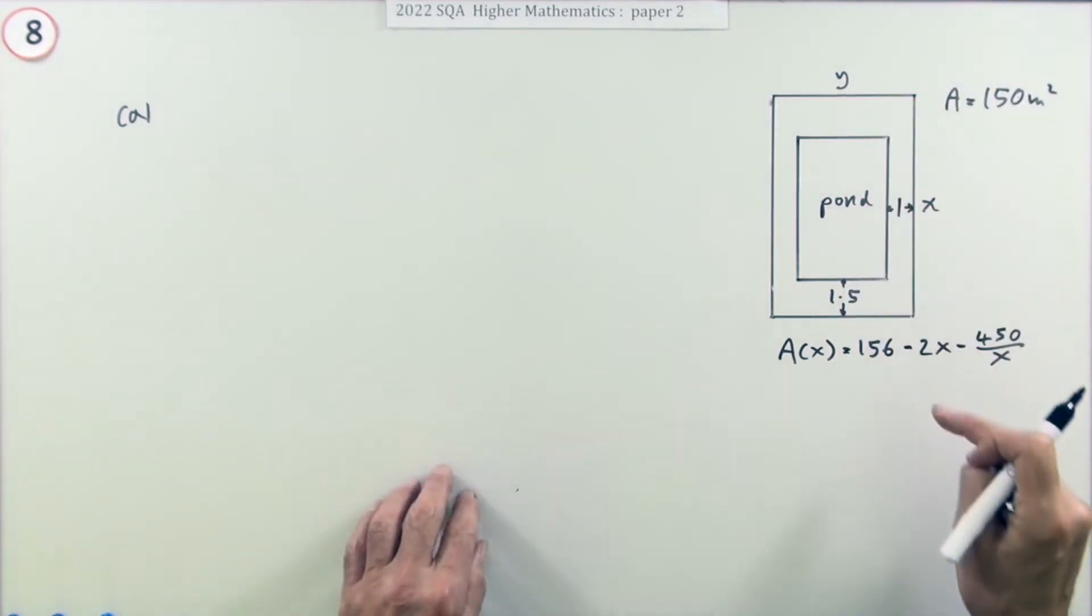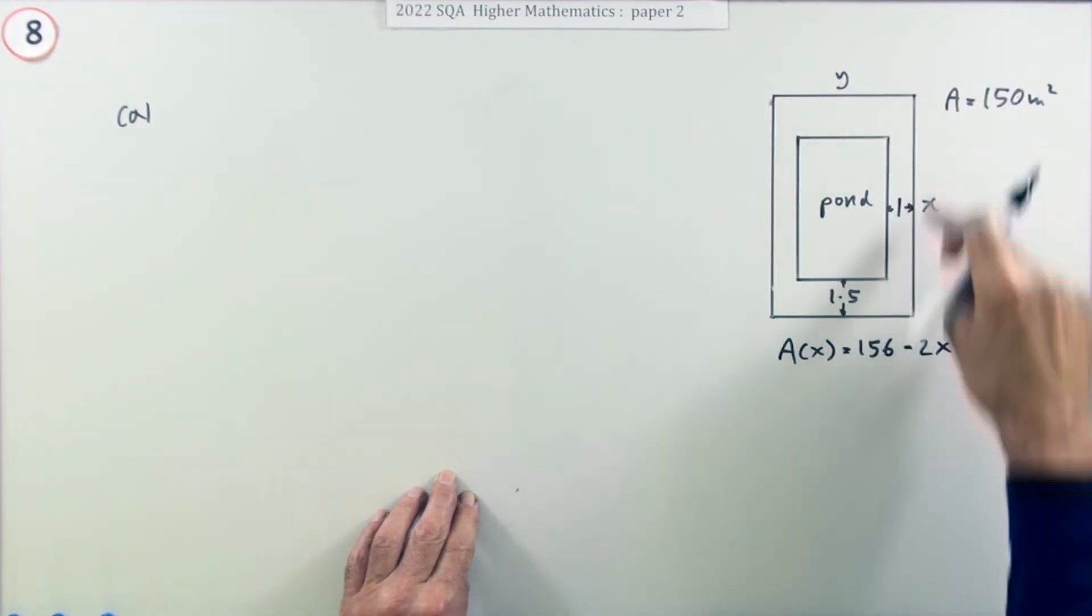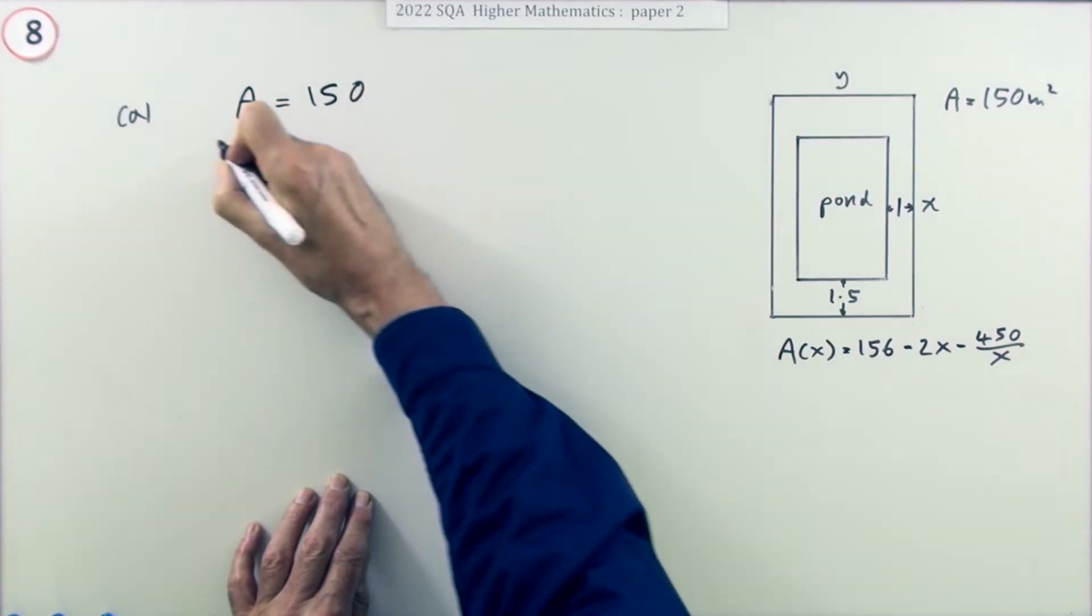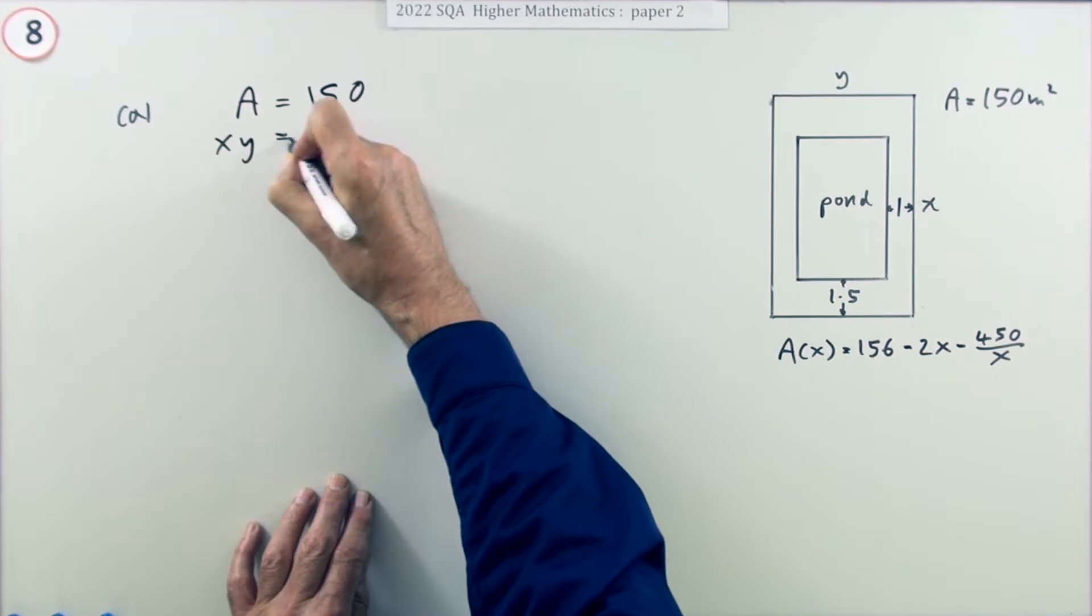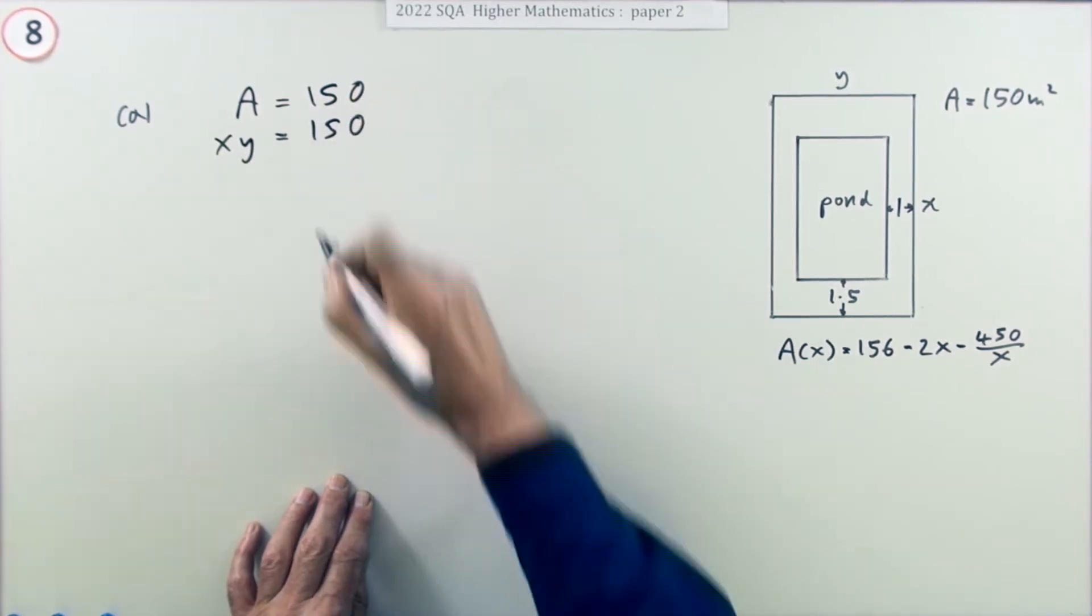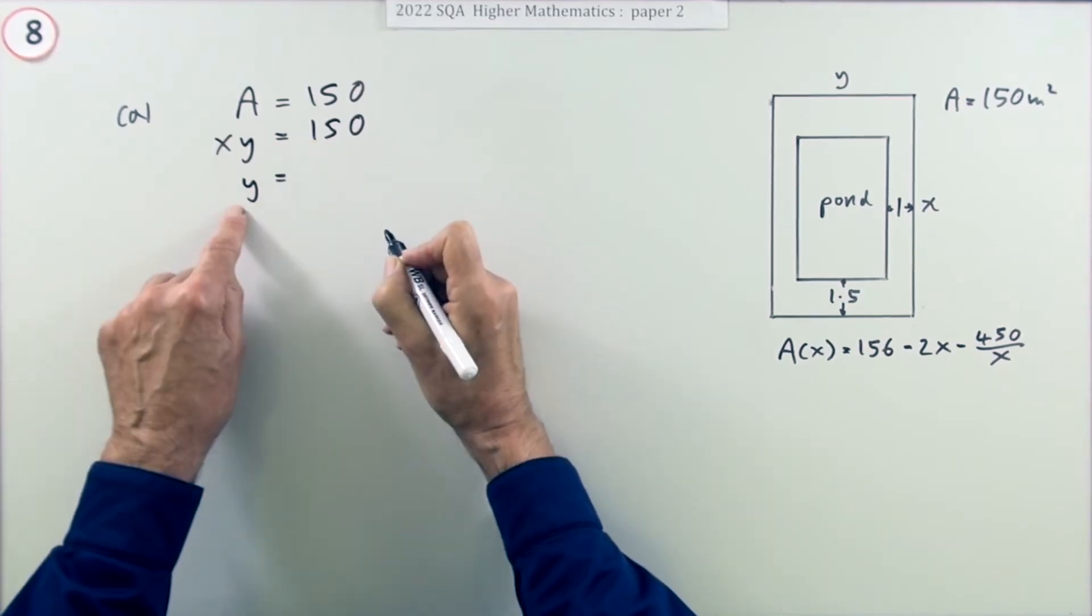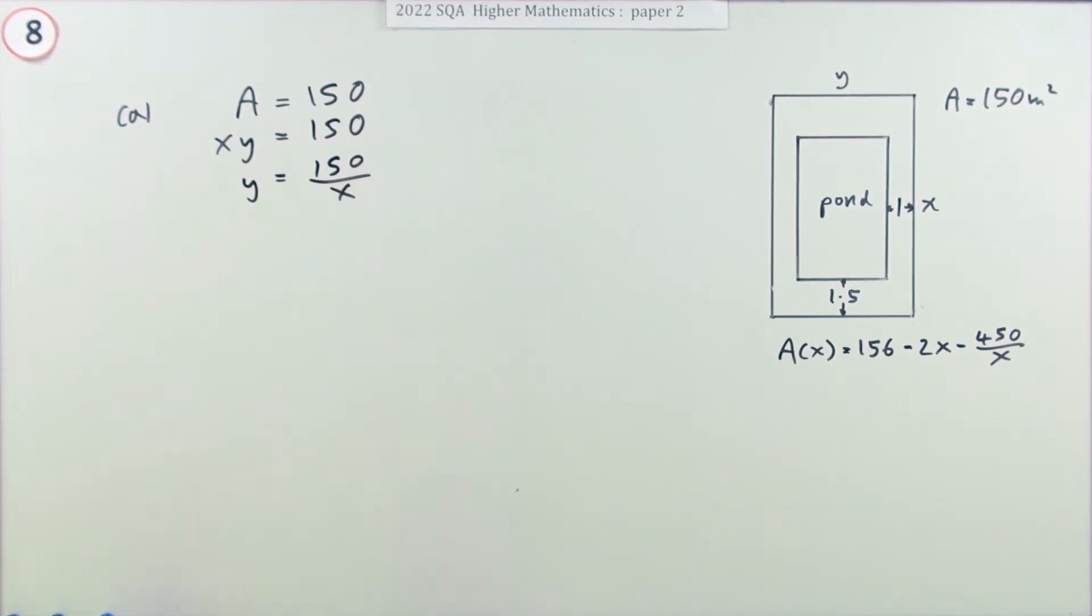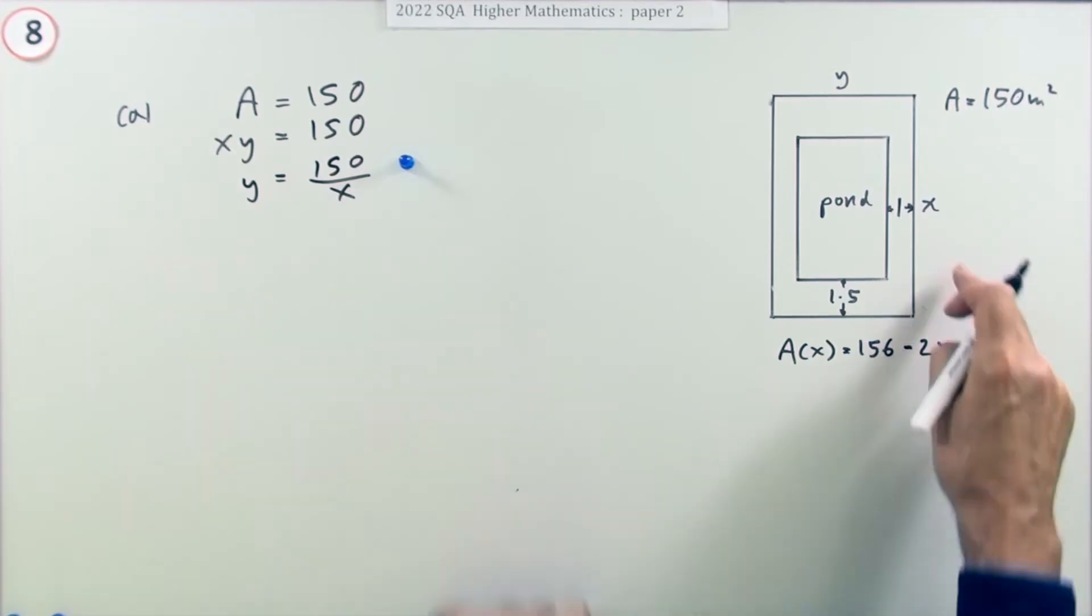I'll start off with that. What is the total area? That's just length times breadth. So if the total area is 150, that means x times y is 150. That means wherever you see a y, you can replace it with 150 over x. That's the handy thing. That's the critical bit that makes this work.